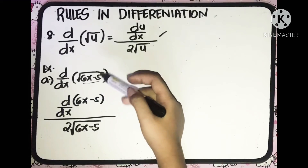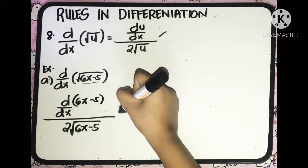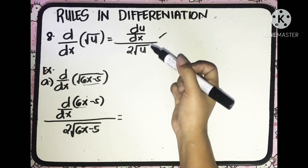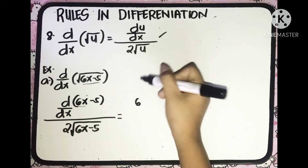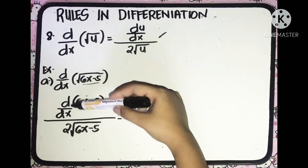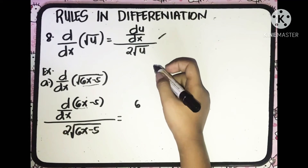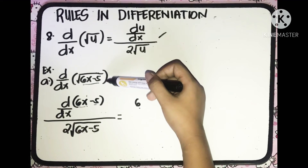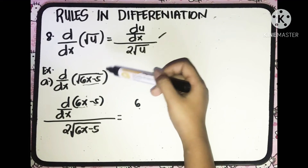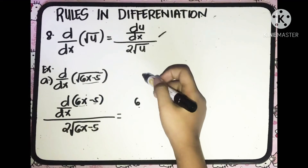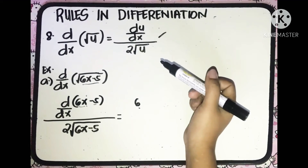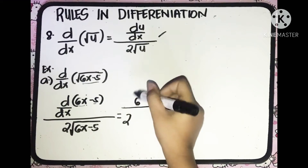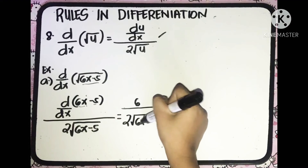Simplifying, let's simplify the numerator first. The derivative of 6x: we take out the constant 6, and the derivative of x with respect to x is 1, so 6 times 1 is equal to 6. And the derivative of the constant negative 5 is equal to 0. So we'll have 6 times 1 minus 0, which equals 6. So we have 6 in the numerator, all over 2 square root of (6x minus 5).